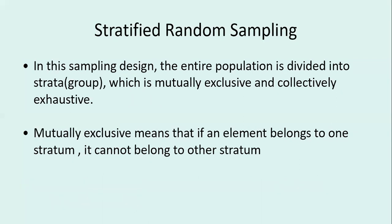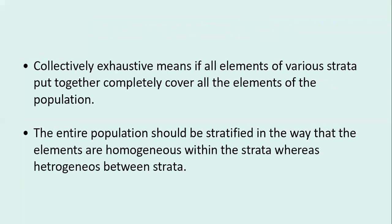The other kind of sampling is stratified random sampling. In stratified random sampling, the entire population is divided into strata or groups which are mutually exclusive and collectively exhaustive. Mutually exclusive means that if one element belongs to one strata or one group, it will not belong to any other group.